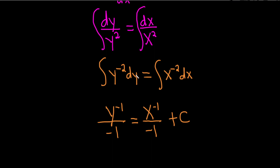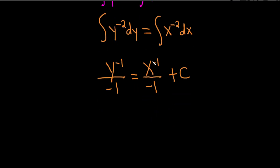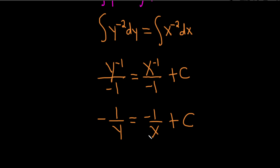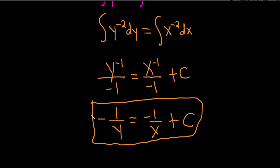Let's clean this up just a little bit. We can bring these variables back downstairs, make the exponents positive, and put the negative signs on the outside. So we have negative 1 over y equals negative 1 over x, plus C, which is our constant of integration. We could solve for y, but I'm going to leave it just like this. I hope this video has been helpful to someone out there in the world.